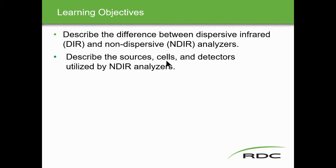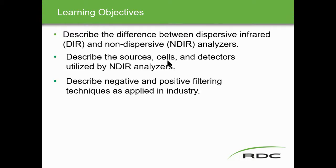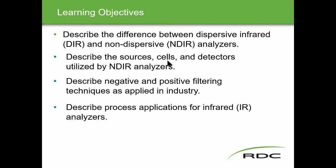The learning objectives also include: describe the sources, cells, and detectors used by non-dispersive analyzers; describe negative and positive filtering techniques as applied in industry; and describe process applications for infrared analyzers. Mostly with infrared analyzers, we're measuring for CO and CO2.